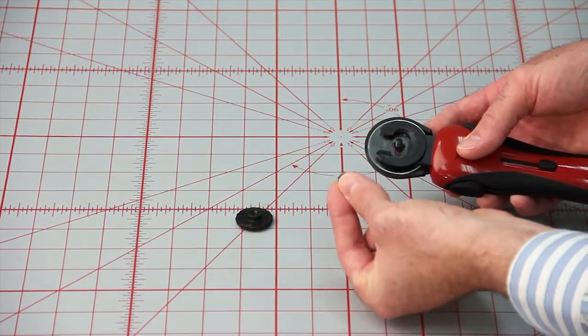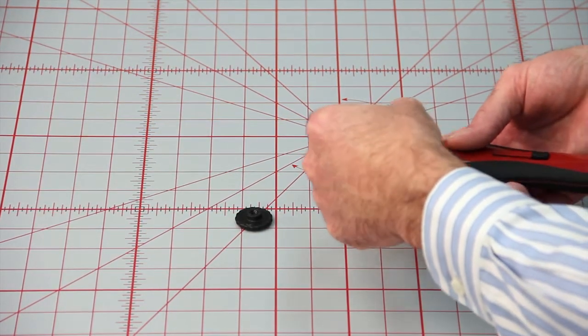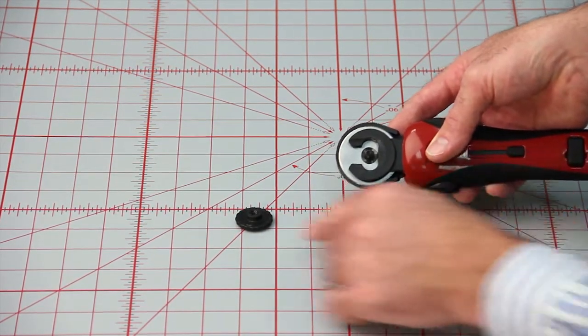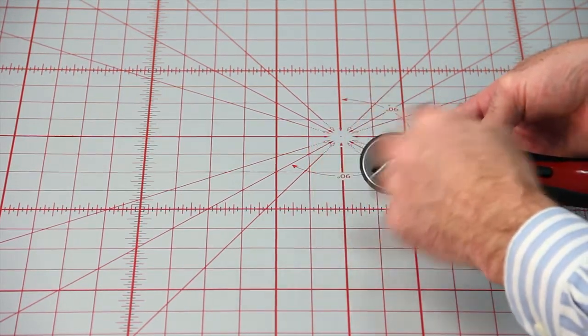We're going to go ahead and take the spring, put the spring back over the bolt. We're then just going to take the nut and tighten this back down on top.